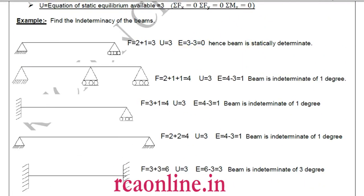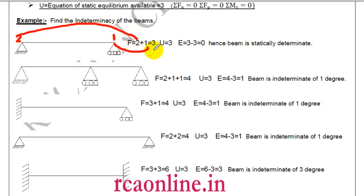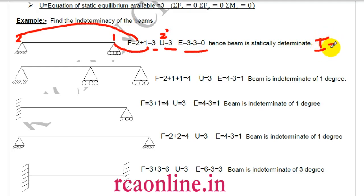For the first numerical: a beam with a hinge gives f=2 and a roller gives f=1, so total f equals 3. For two dimensions, u is 3, so E equals zero. Hence, the beam is statically determinate — no additional equations are needed. Also, I equals zero because no closed loop forms in a beam.